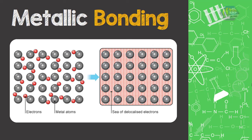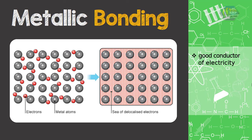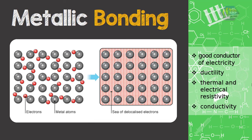This is why metal is a good conductor of electricity — because the electrons move freely between atoms and current flows. Metallic bonding is also the reason for other physical properties of metals, such as ductility, thermal and electrical conductivity, and many others.